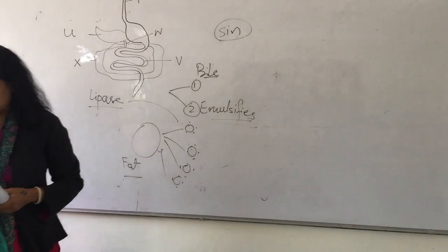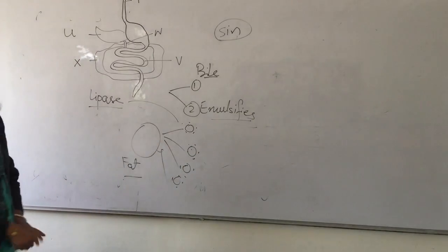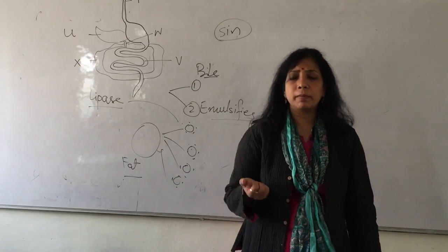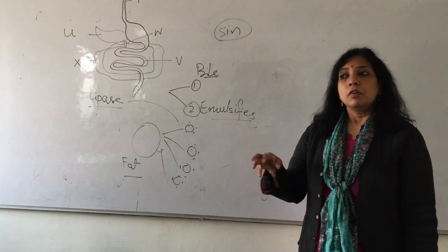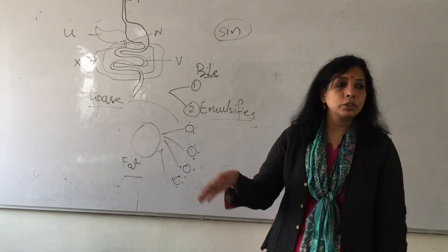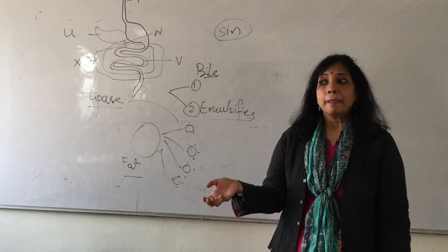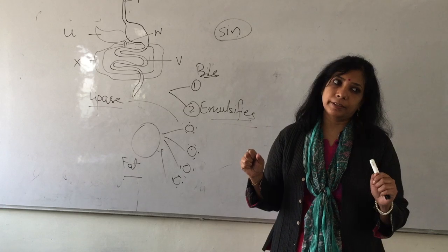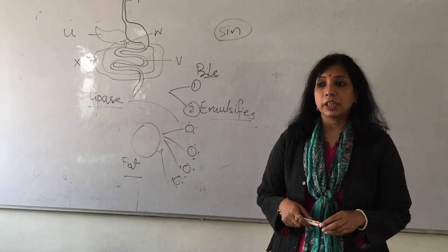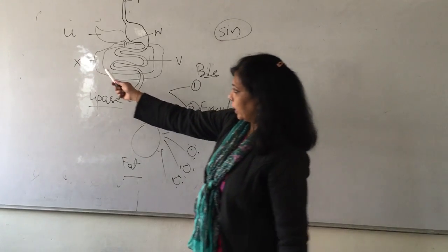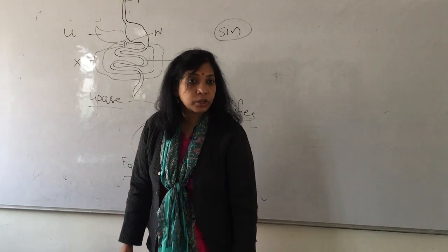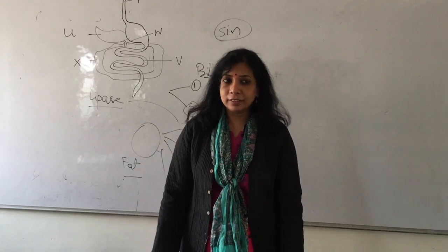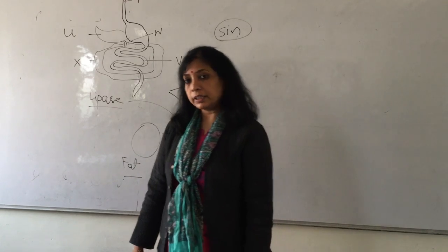Next question: In case of diarrhea, name the major process in region X which is no longer occurring normally. X is large intestine. What happens in the large intestine? Our body is 70% water. In the large intestine, the excess water is absorbed. In diarrhea there is water loss. So the answer is water absorption.